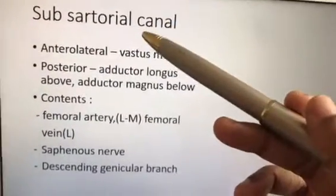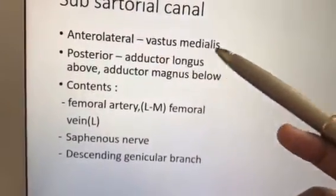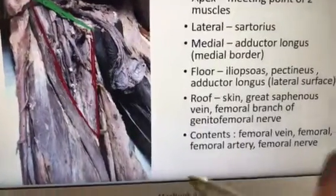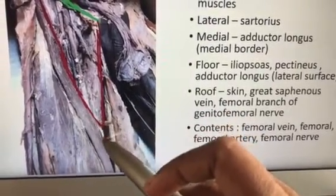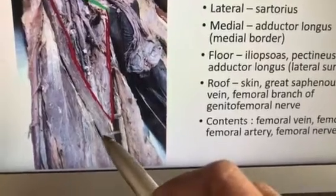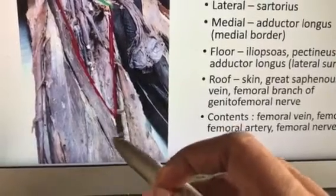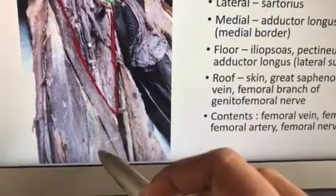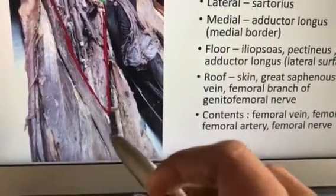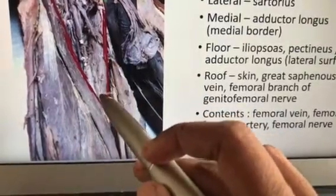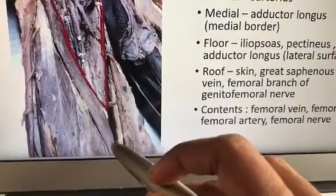The subsartorial canal is the second important question. The anterolateral boundary is formed by vastus medialis — do not write vastus lateralis. The femoral triangle stops at the apex; from there the subsartorial canal begins. Posteriorly, the upper part is bounded by adductor longus and the lower part by adductor magnus. On the roof, you have sartorius and the subsartorial plexus of nerves.